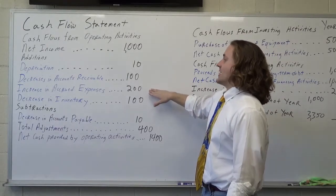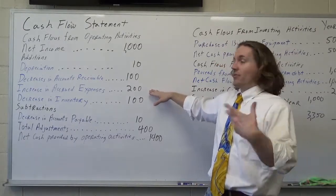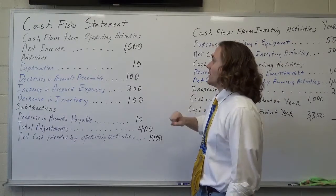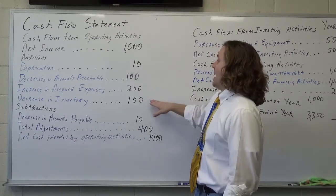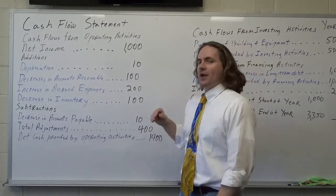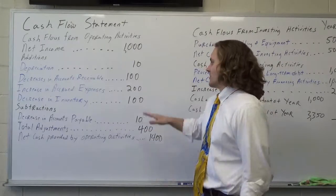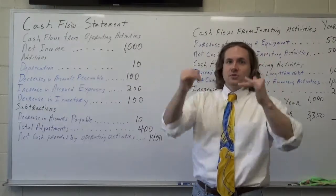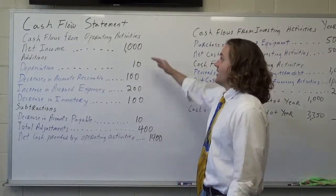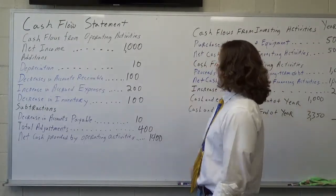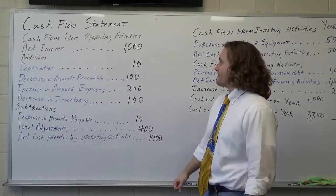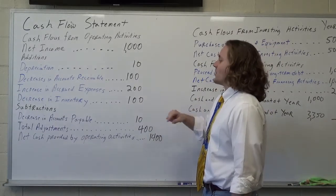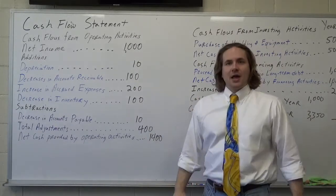Increase in accrued expenses — in other words, I've been invoiced but I haven't paid that yet. Since I haven't paid it yet, that's two hundred dollars. And then a decrease in inventory: I've sold a hundred dollars worth of goods, so my inventory has decreased. These are all my additions.